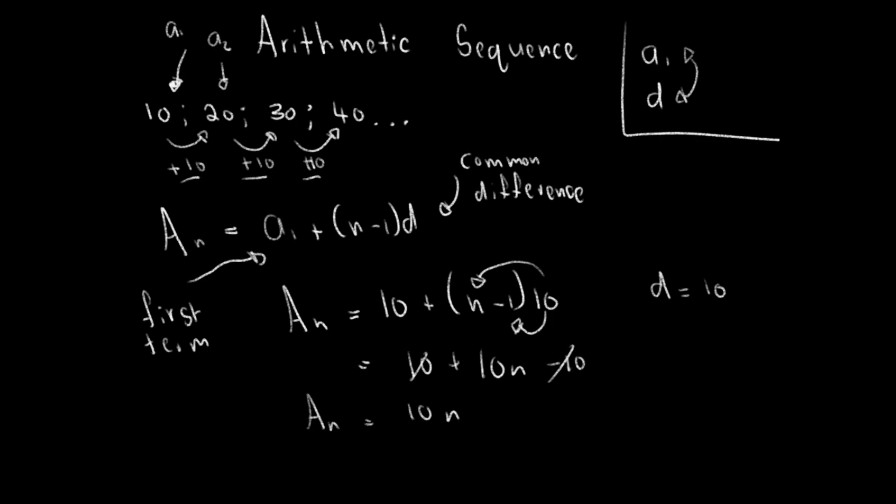Now let's test if this rule is true. I want to find the fourth term. We know the fourth term is supposed to be 40 but let's see. So I want to find a_4. I can find a_4 by substituting 4 into n. So n just refers to the term. I want the fourth term, and then 10 multiply 4 gives me 40, and in fact my fourth term is 40.